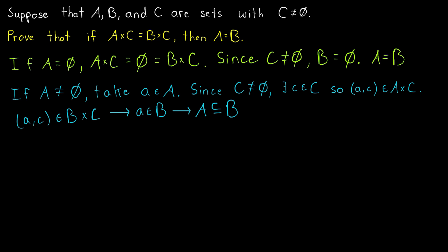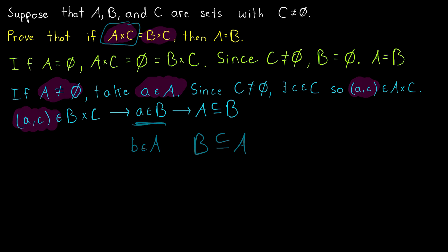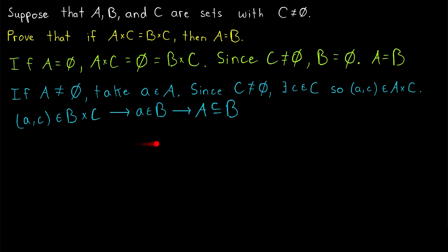You can try finishing the proof yourself by writing the part to prove that B is a subset of A. The logic is precisely the same. You would take an element b from the set B, form the ordered pair (b, c) in B cross C, and since B cross C equals A cross C, you'd have that ordered pair in A cross C, which would mean b is an element of A. This exact same logic works because based on our assumptions, there is no meaningful difference between A and B.